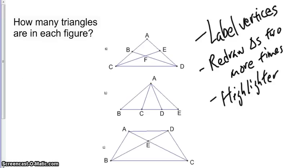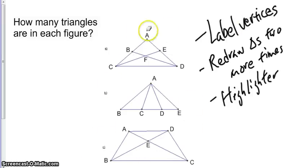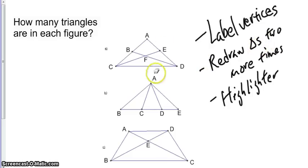At this point in time, I'd like you to pause the video and do three things for me. The first thing is to label the vertices of all your triangles, as you see here on your screen. Redraw the triangles two more times, again with the vertices, and get a highlighter.